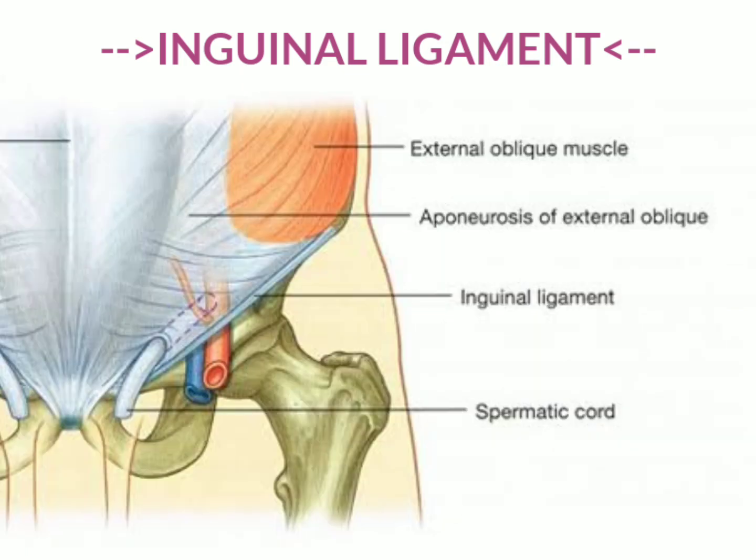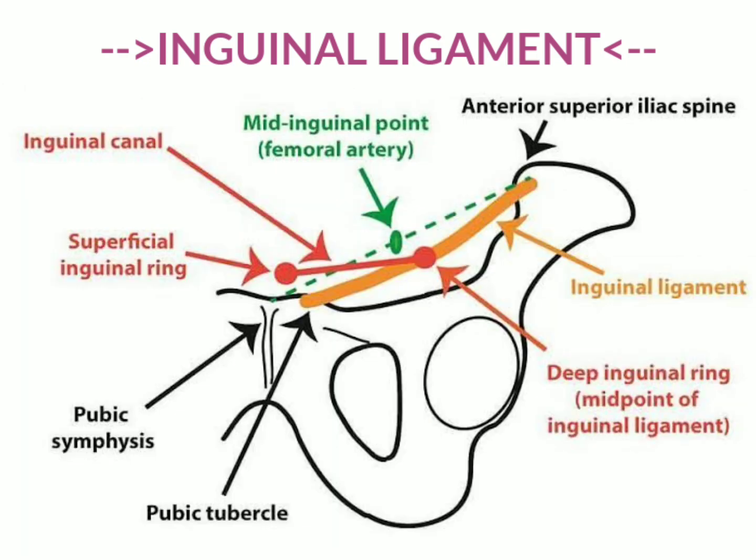The inguinal ligament is the modification of the upper aponeurosis of the external oblique muscle, which is present in the abdomen. As a ligament, it connects two bony structures — the anterior superior iliac spine and the pubic tubercle. It extends from the anterior superior iliac spine to the pubic tubercle.